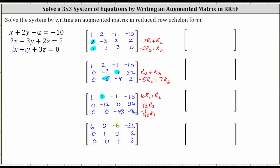We're almost there. We need a zero in row one column three. Looking at row one and row three, six times one plus negative six is zero. So we'll replace row one with six times row three plus row one: six times zero plus six is six; six times zero plus zero is zero; six times one plus negative six is zero; six times two plus negative thirty-six is twelve plus negative thirty-six, or negative twenty-four.